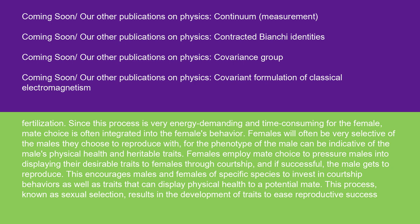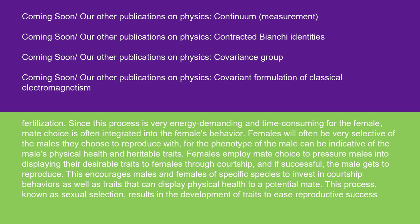This encourages males and females of specific species to invest in courtship behaviors as well as traits that can display physical health to a potential mate. This process, known as sexual selection, results in the development of traits to ease reproductive success rather than individual survival, such as the inflated size of a termite queen. It is also important for females to select against potential mates that may have a sexually transmitted infection, for the disease could not only hurt the female's reproductive ability, but also damage the resulting offspring.